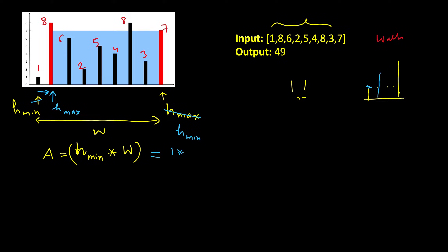Writing the actual numbers: initial area was 1 times 8 = 8. After moving the pointer, the new width is 7 and H_min is 7 (H_max is 8), so the new area is 7 times 7 = 49. We compare this with the earlier max area and update it — so max area is now 49.